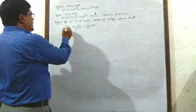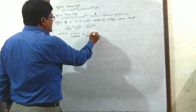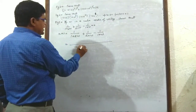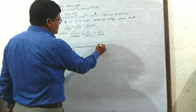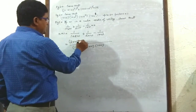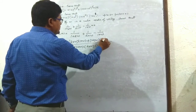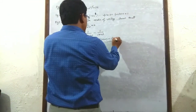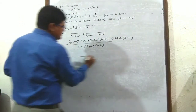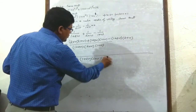Example 3: Left hand side = 1/(1 + 2ω) + 1/(2 + ω) - 1/(1 + ω). Taking LCM of (1 + 2ω)(2 + ω)(1 + ω), the numerator becomes (2 + ω)(1 + ω) + (1 + 2ω)(1 + ω) - (1 + 2ω)(2 + ω).